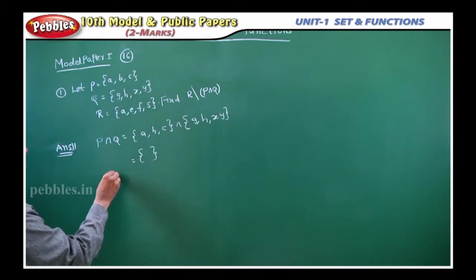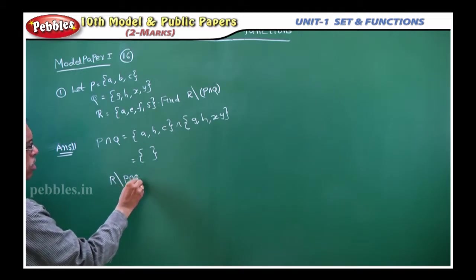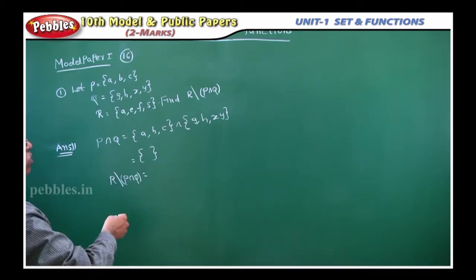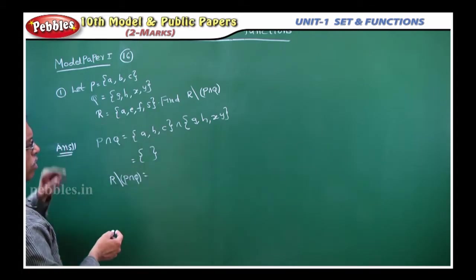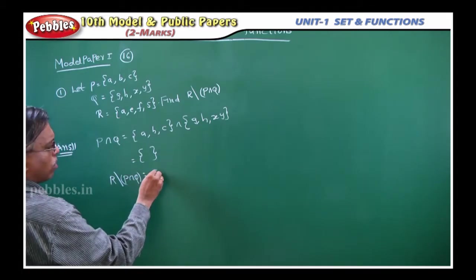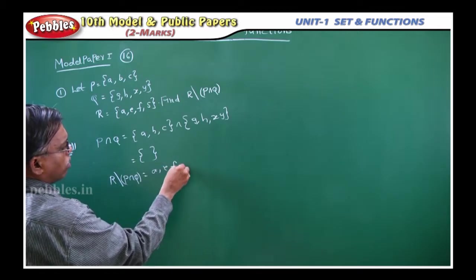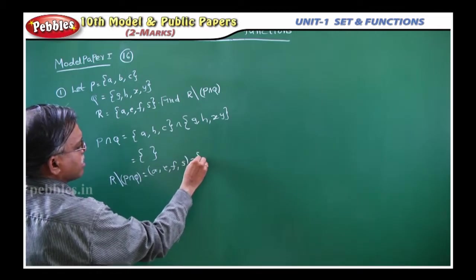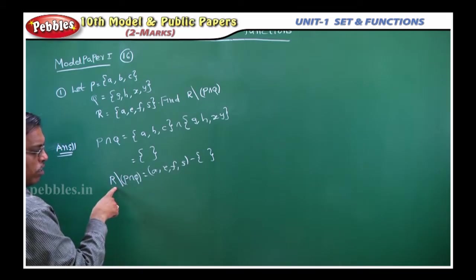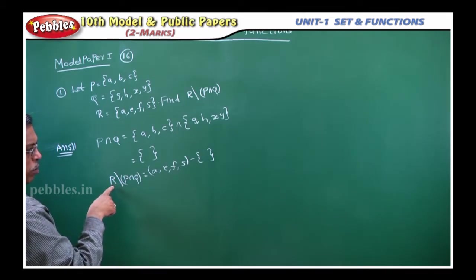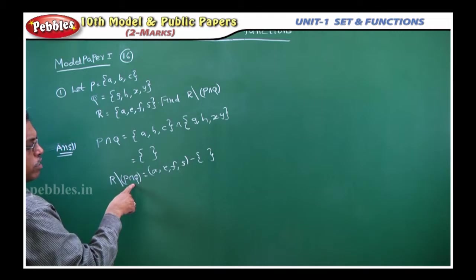So what is R slash P intersection Q? The elements which are present in R but not in this set. So full R set will come. It is the elements present in R minus a null set, because R difference means the elements which are present in R but not in P intersection Q.